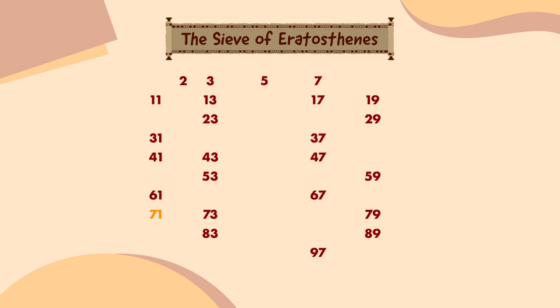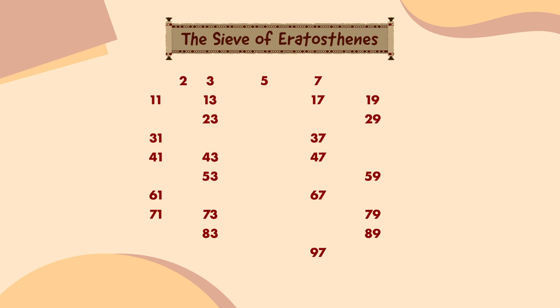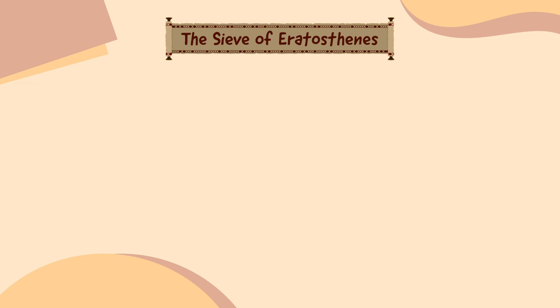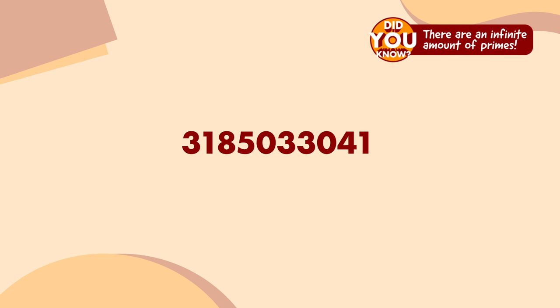Now that we can see all the prime numbers between 1 and 100, you might notice some interesting things. First, there isn't really any pattern — they appear to be pretty randomly placed. Second, there's only one even prime number: 2, because all the other even numbers can be divided by 2. Third, there are a lot of prime numbers close together at the start, but the gaps between them start to get wider and wider as we go up. In fact, those gaps keep getting wider forever. Did you know there are an infinite amount of prime numbers? New ones are discovered every few years, and the biggest one found so far has nearly 25 million digits.